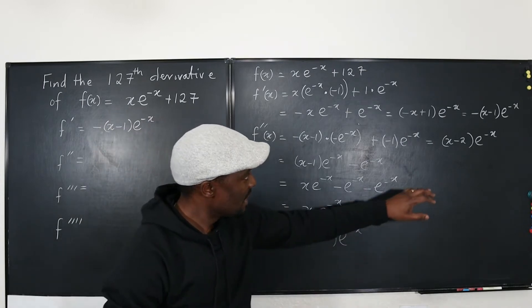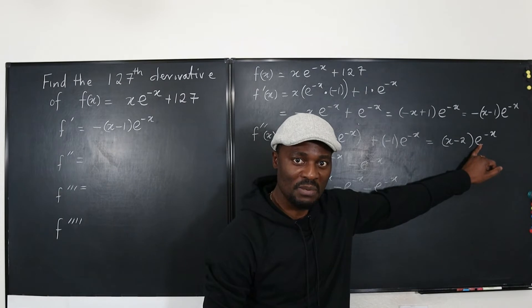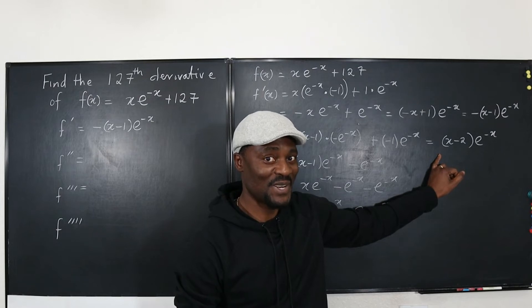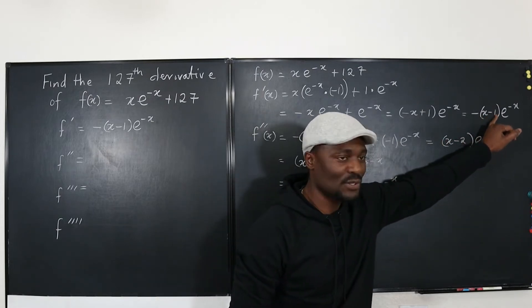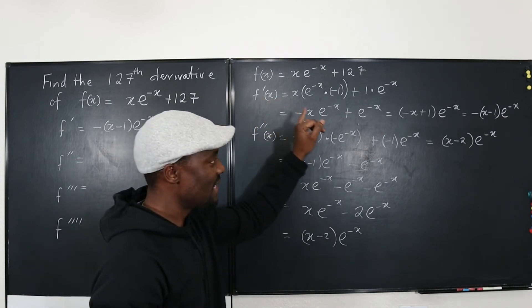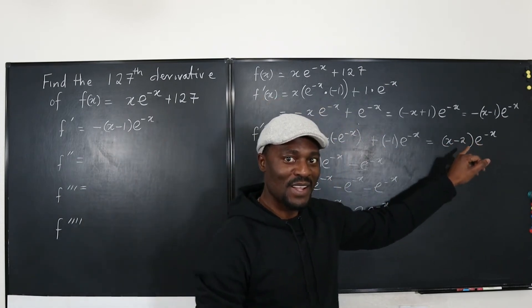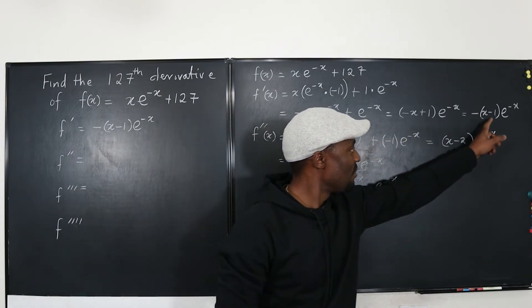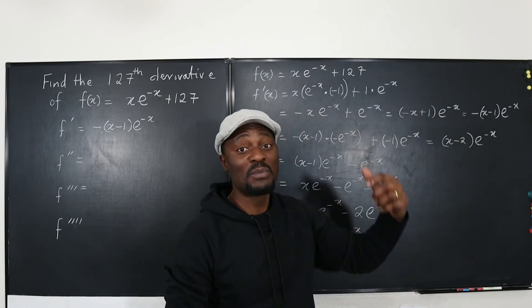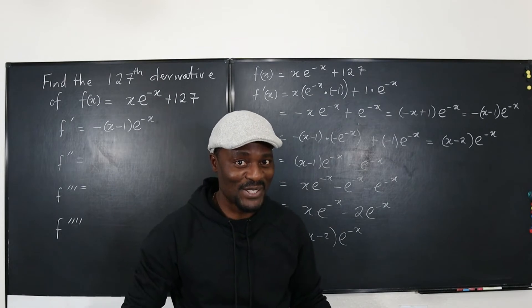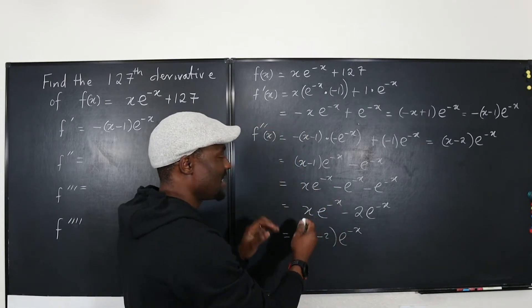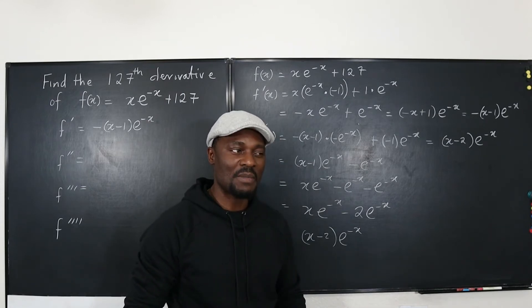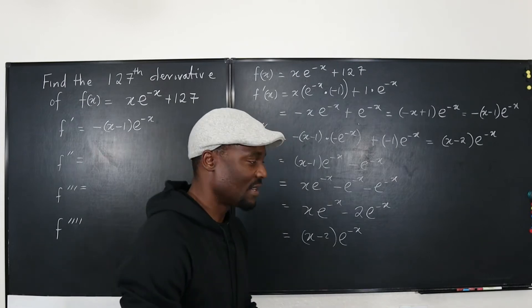At this point you can see that e^(−x) has appeared in every result, but the sign in front varies — it was negative for the first derivative but not for the second. After the first derivative we got (x − 1), and after the second we got (x − 2). It looks like the number in the parentheses matches the derivative count, so let's take the third derivative with that prediction in mind.